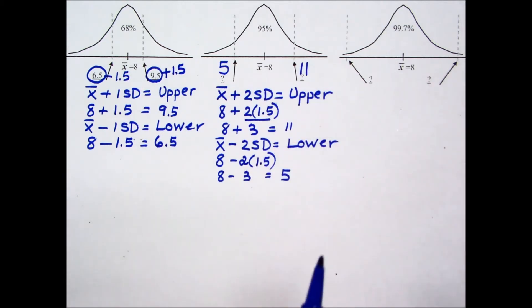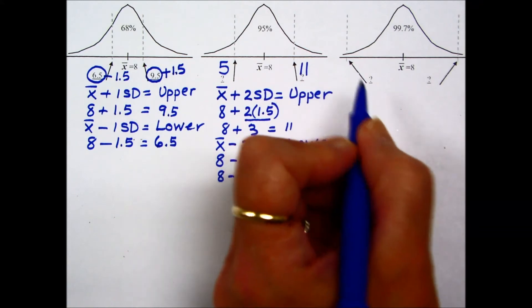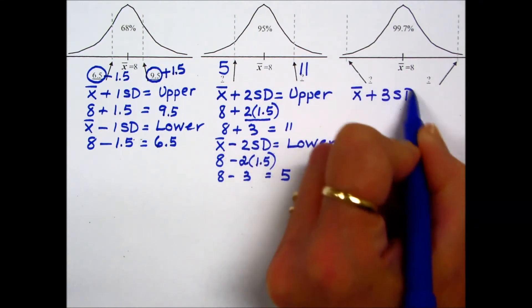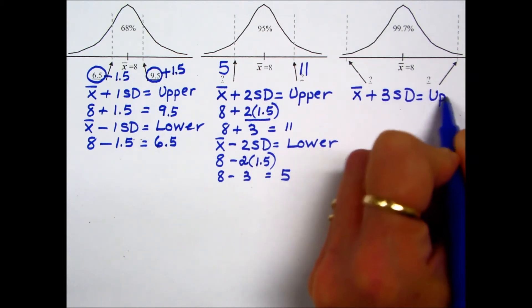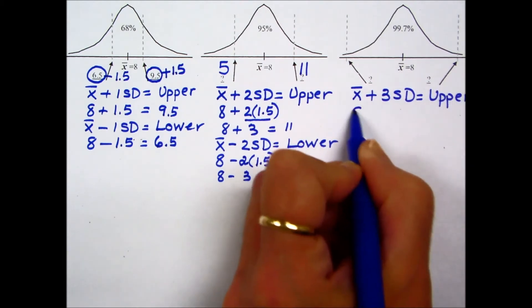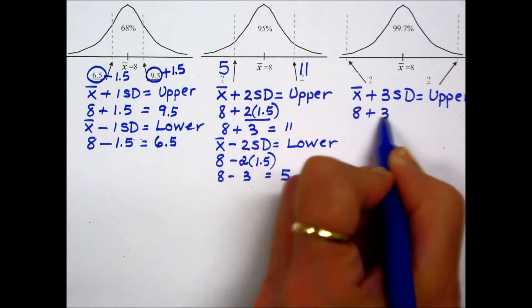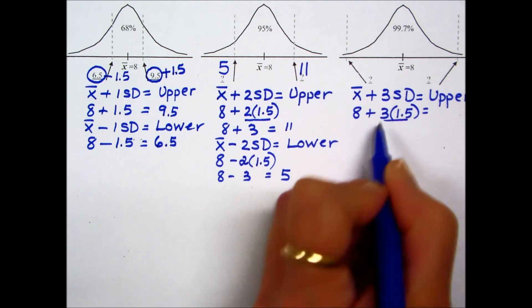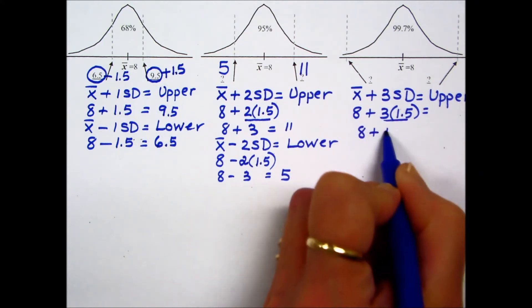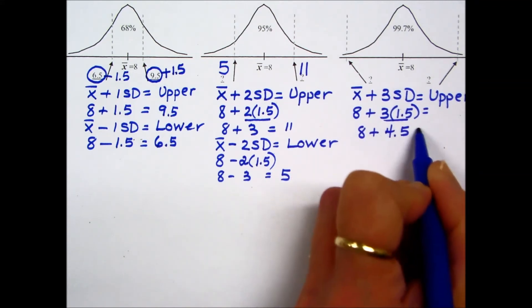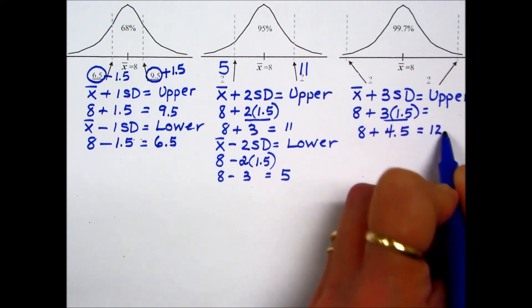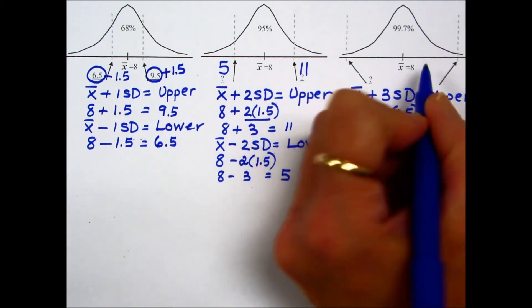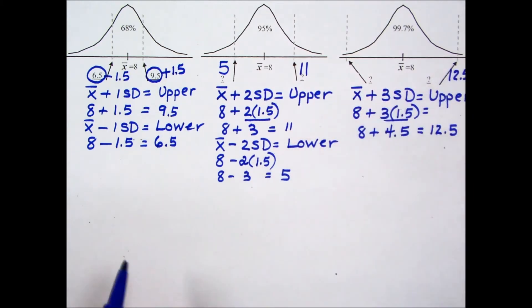Last, 99.7% boundaries are found by taking the mean plus 3 times the standard deviation for the upper boundary, our mean of 8, 3 times the standard deviation, which is given as 1.5. We'll multiply first resulting in 4.5 and then adding giving us an upper boundary of 12.5.